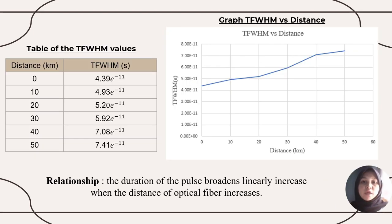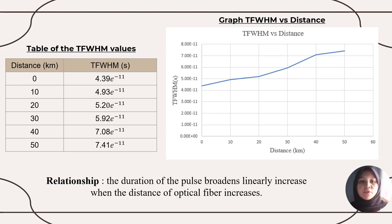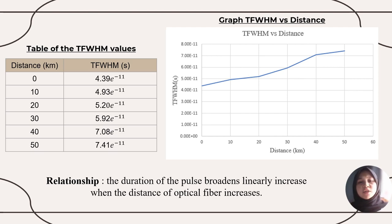The data is tabulated and transformed into a graph of TFWHM versus distance. Based on the graph, the pulse duration broadens with a linearly increasing relationship as the fiber optic distance increases. This is because the time delay between various wavelength components grows larger as the distance traveled by the pulse increases, causing a linear increase in pulse broadening. As the pulse traverses the optical fiber, dispersion causes slight variations in the speed of different wavelengths, creating a time gap between the arrival of different pulse segments, and hence the pulse broadens.